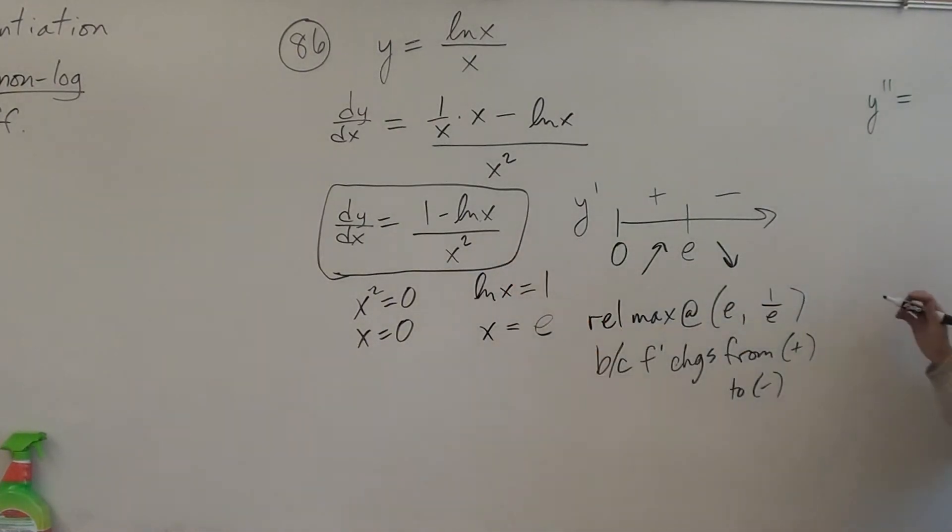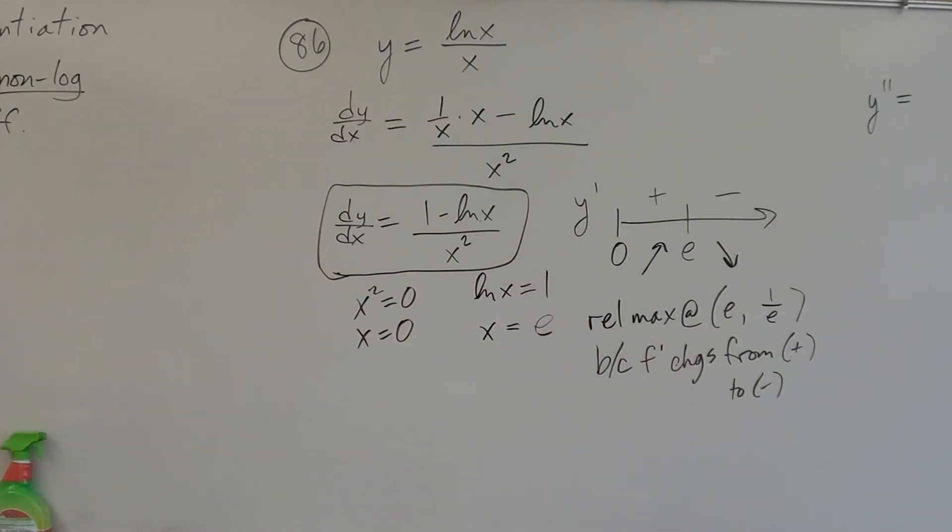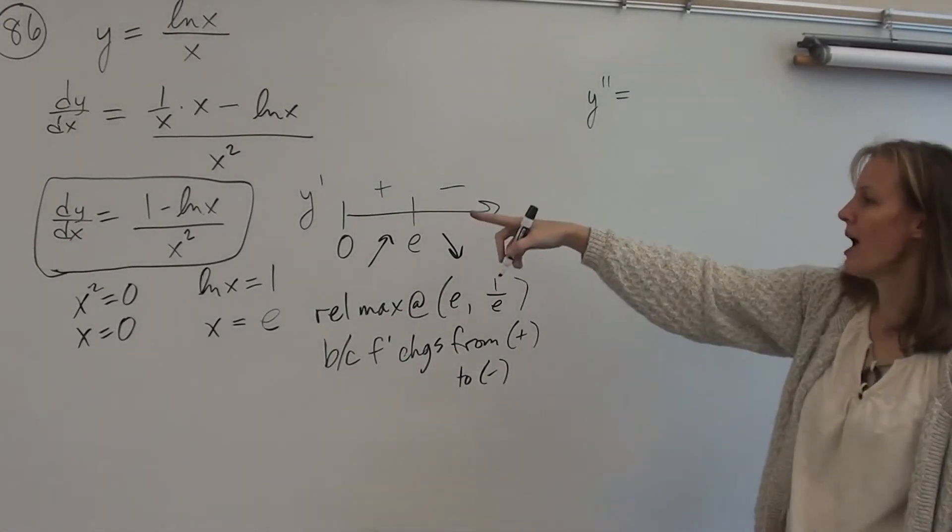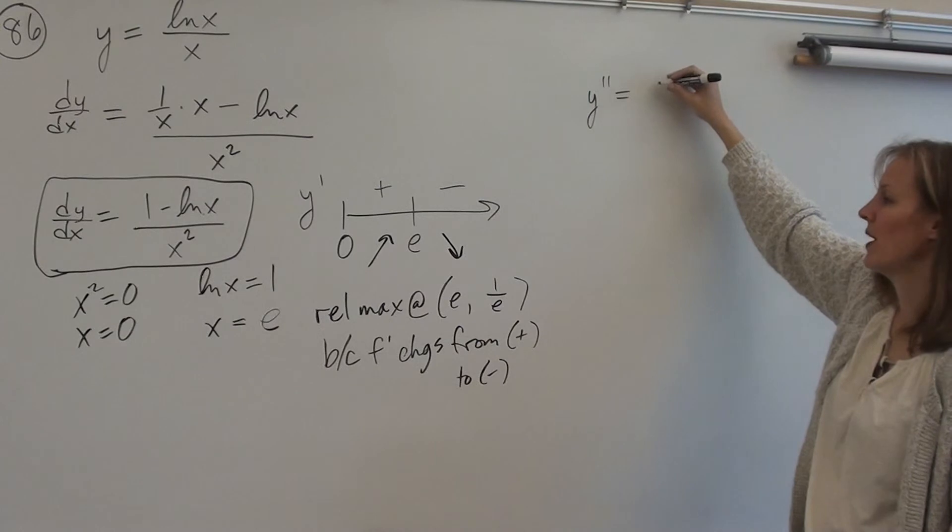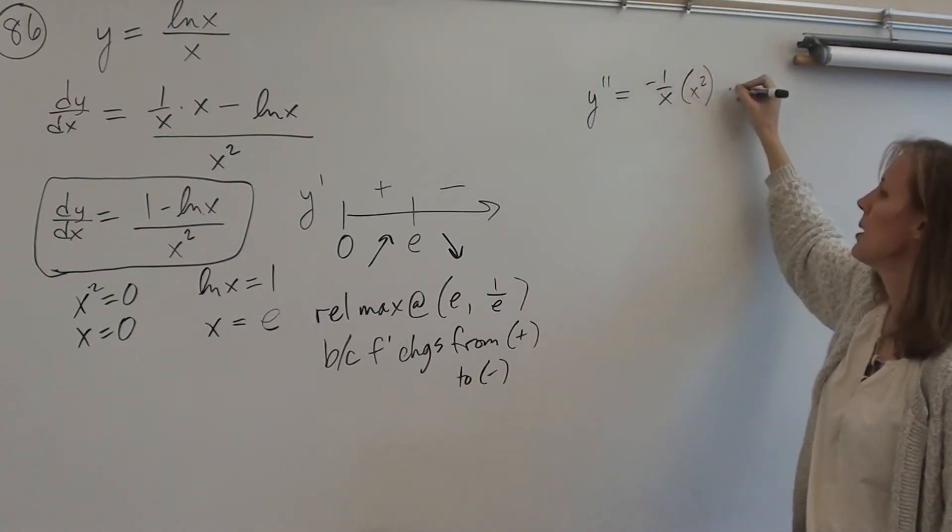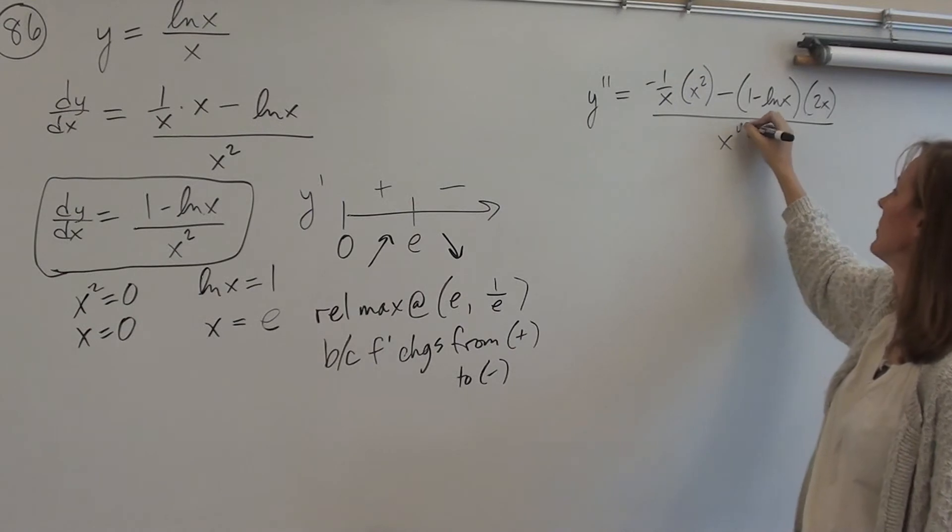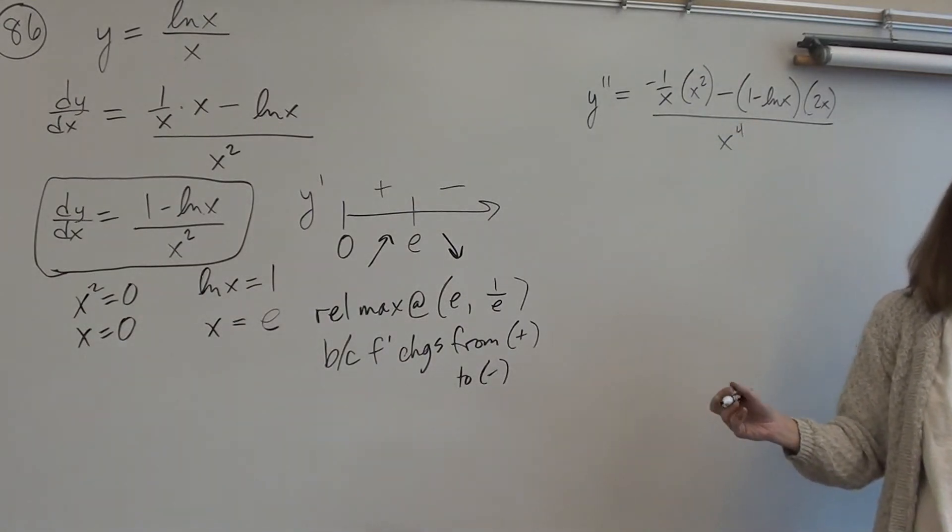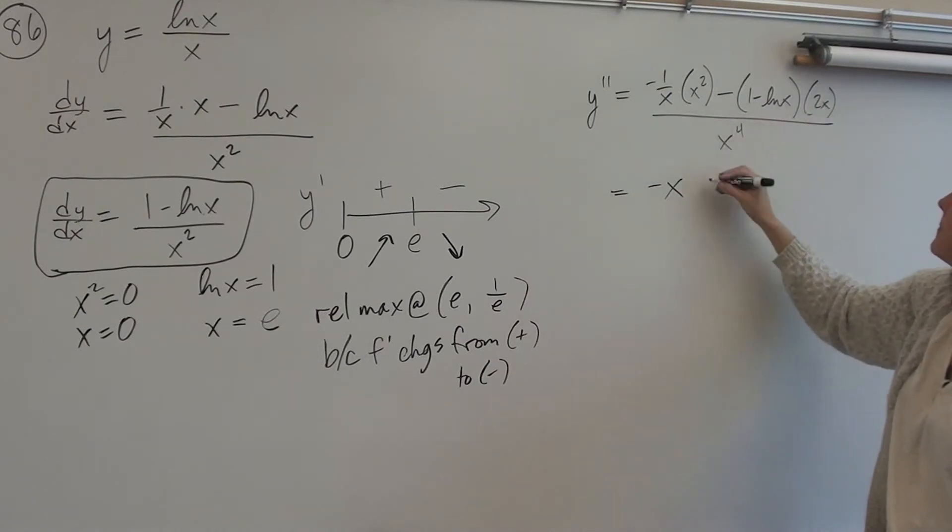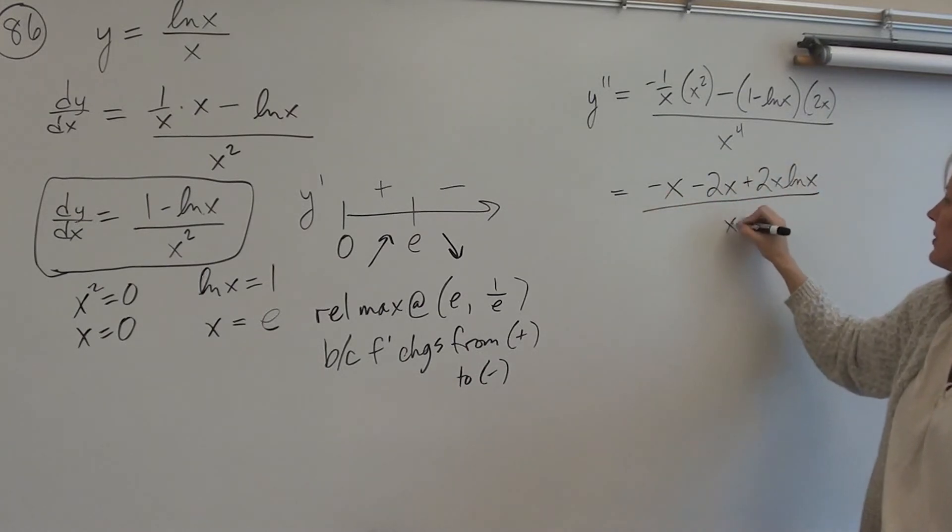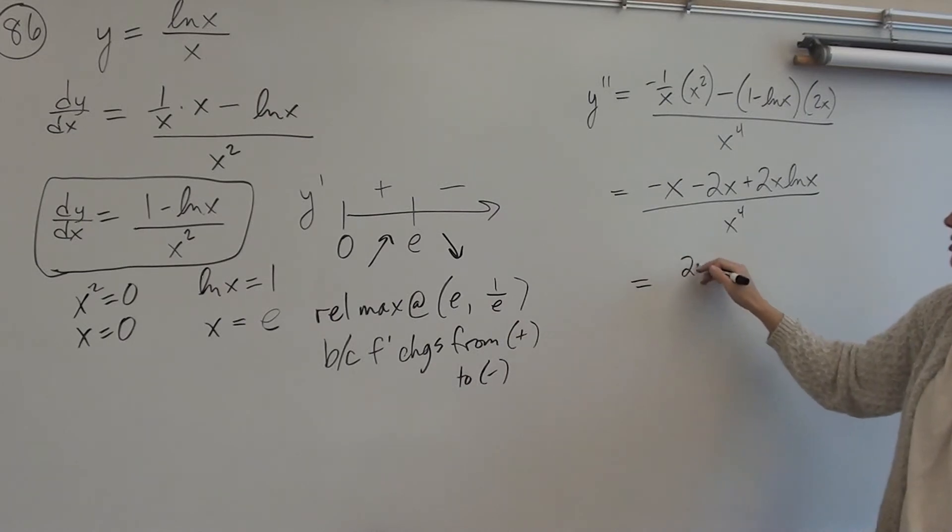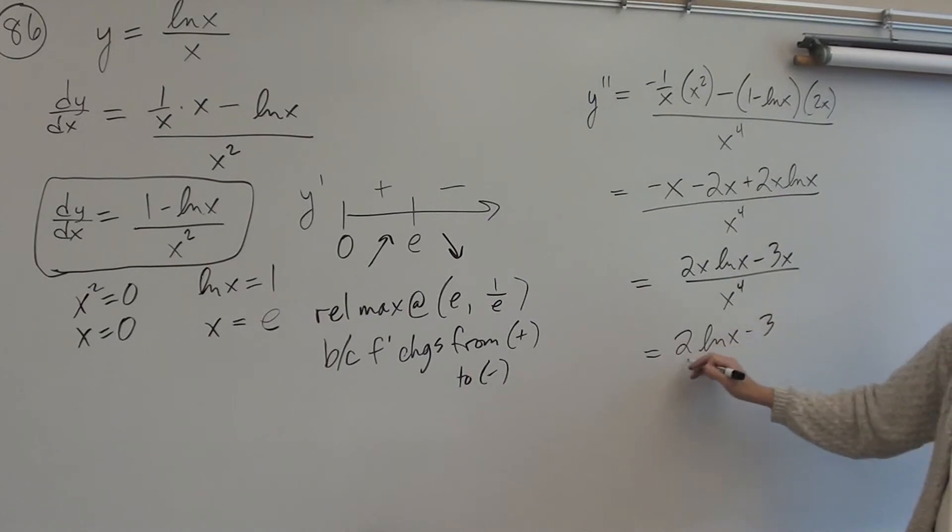Y double prime. We're using quotient rule. Bell's going to ring. I'm going to do this quickly. All right. Shifting the camera over. All right. Derivative of the top. Well, let's see. Derivative of 1 is 0. Negative ln x, so negative 1 over x, times the bottom, minus the top, times the derivative of the bottom, all over the bottom, squared. So what you get is negative x minus 2x plus 2x ln x, just distributing some stuff. So you get 2x ln x minus 3x over x to the fourth, and you can cancel an x from every term. You get 2 ln x minus 3 over x cubed.